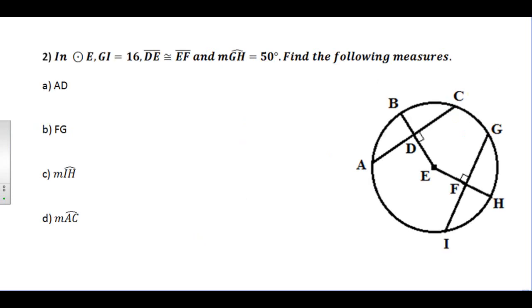Example number two: in circle E, GI is 16. Well, before I go any farther here, if GI is 16, I have a radius here that is perpendicular to that. So if this whole thing is 16, both of these pieces here have to be 8.